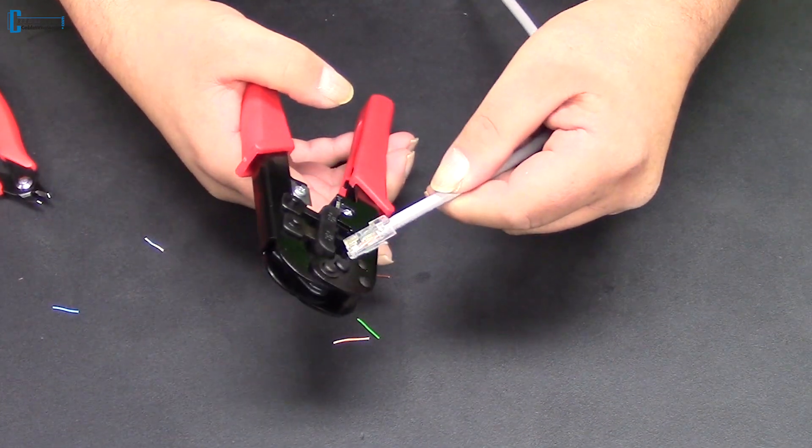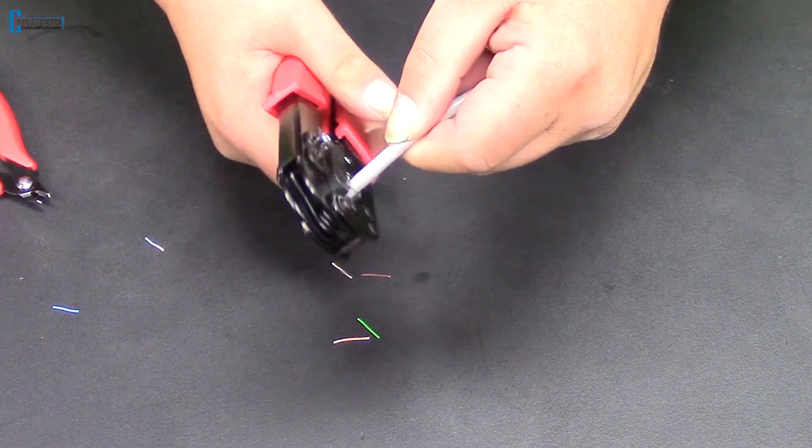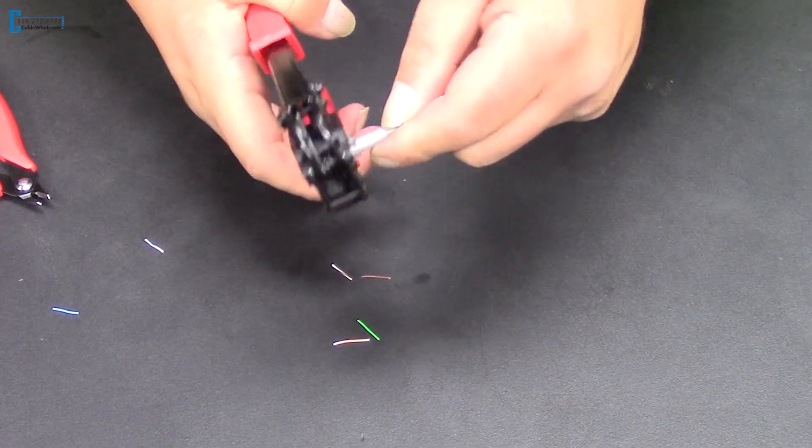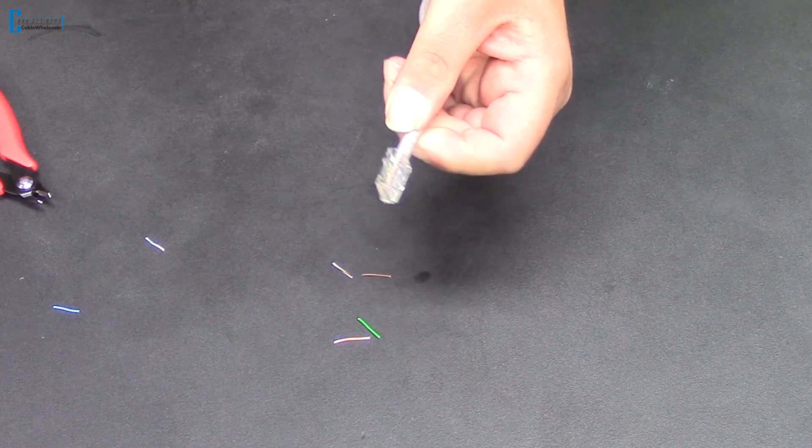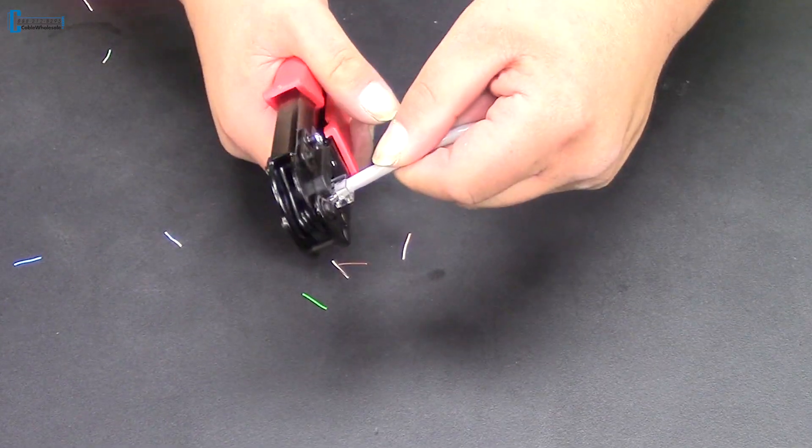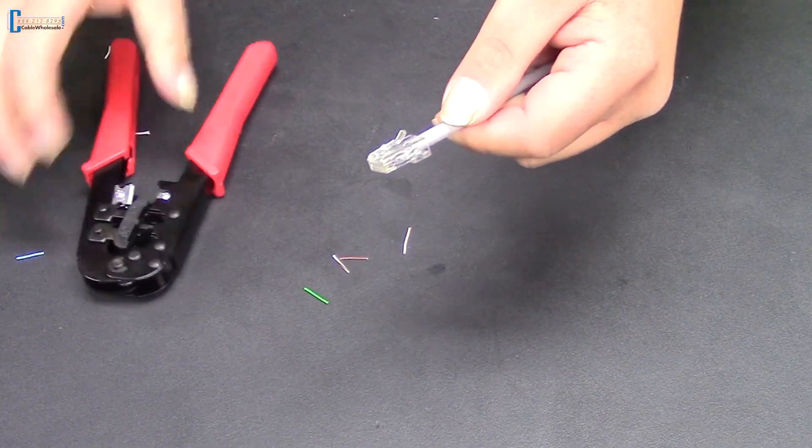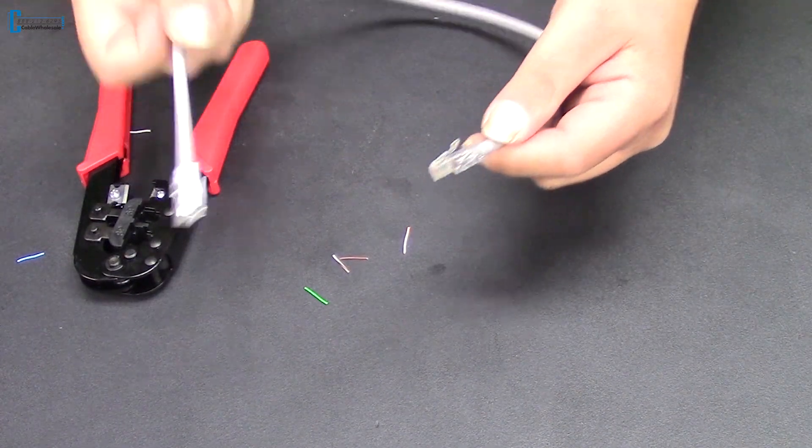The last thing we need to do is crimp down the connector. And voila! Repeat these on the other side and you've made your own CAT6A. Time to take over the world!